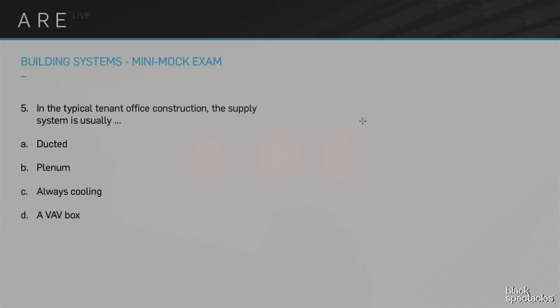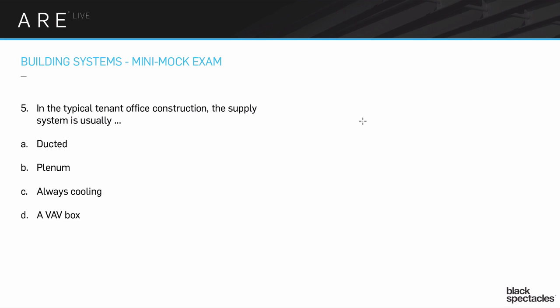Number five. So this is a little bit of a trick one and it's meant to make sure you're reading it. In a typical tenant office construction, so it's an office building, a bunch of tenants in the building, there's lots of different people. The supply system is usually ducted, plenum, always cooling, a VAV box.